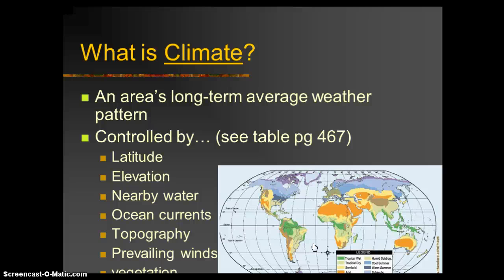Climate controls include latitude — how far away from the equator the location is — elevation from the ground, looking at mountaintops versus valleys, whether it's nearby water such as the Great Lakes or ocean. We talked in the last unit about how the ocean conveys heat and energy, so proximity to warm or cold currents matters. The prevailing global wind patterns also direct where air goes, and topography — whether it's flat, hilly, or mountainous — plays a role as well.